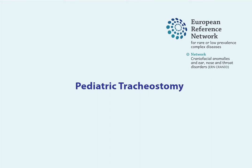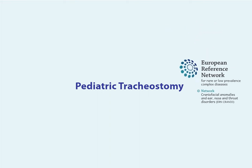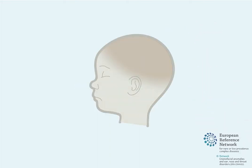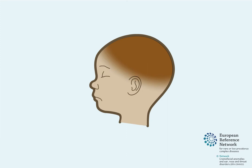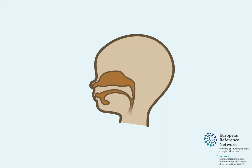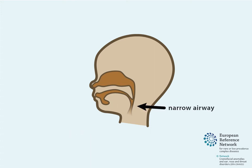Paediatric Tracheostomy. Some children have serious difficulties breathing and or swallowing. This can be due to a number of reasons, such as a narrow airway, paralysed vocal cords, or a congenital syndrome.